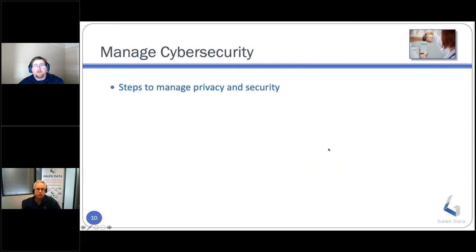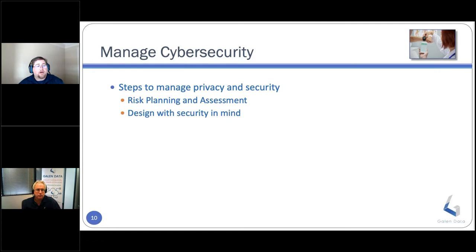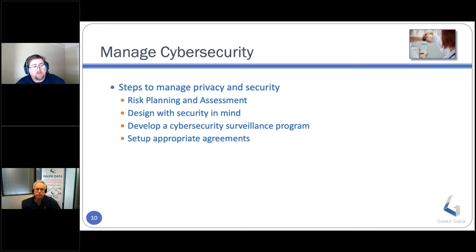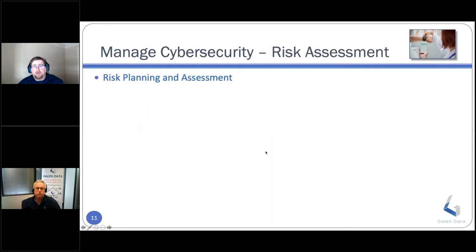Managing cybersecurity involves several steps: risk management and assessment, designing with security in mind, developing a cybersecurity surveillance program, setting up appropriate agreements with all parties, and establishing a culture of cybersecurity. For risk planning and assessment, start with a thorough assessment focusing on data privacy and security. Review the data elements to be collected or stored and consider which fall under the definition of protected data under HIPAA — any data that can reasonably be used to identify a person or a small group of people.